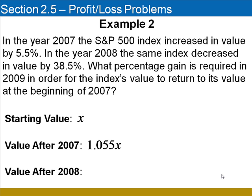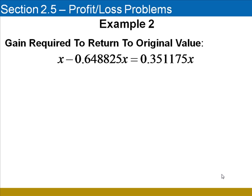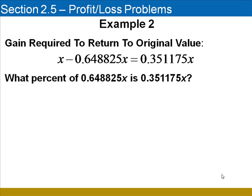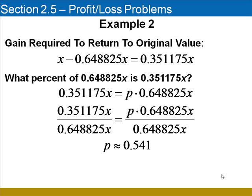In 2008, the index decreased in value by 38.5%, meaning that it held 61.5% of its value. Multiplying 0.615 by its value after 2007, we see that its value after 2008 is 0.648825X. To return to its original value, we subtract that from X and see that it must increase by 0.351175X. We create a percent equation involving the amount of increase and the current value. Dividing both sides by 0.648825X, we see that P is approximately 0.541.